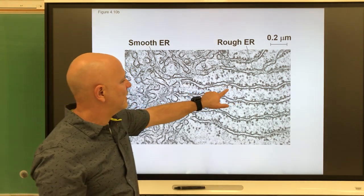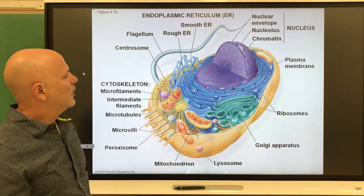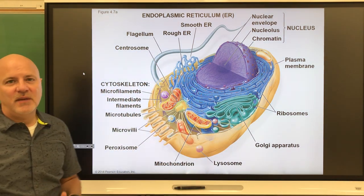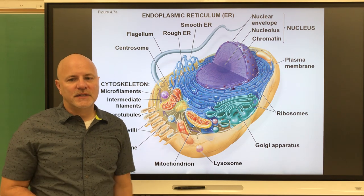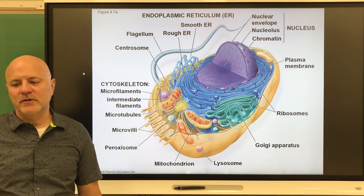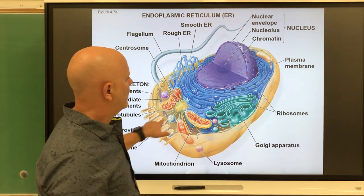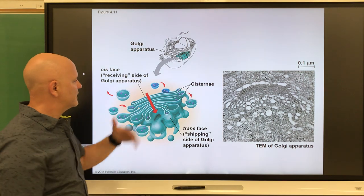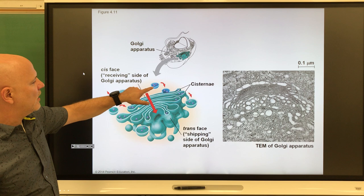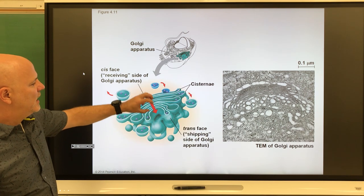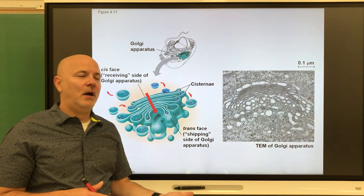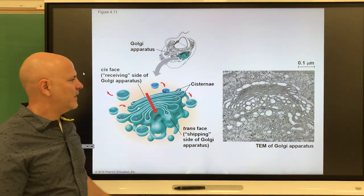Here is a natural picture of the rough endoplasmic reticulum with those ribosomes on it. Next is the Golgi apparatus, named after Emilio Golgi, the man who discovered it. This is an organelle that modifies proteins from the rough endoplasmic reticulum. Transport vesicles from the rough ER come into the Golgi apparatus and are modified — for example, a sugar group or a lipid group may be added.